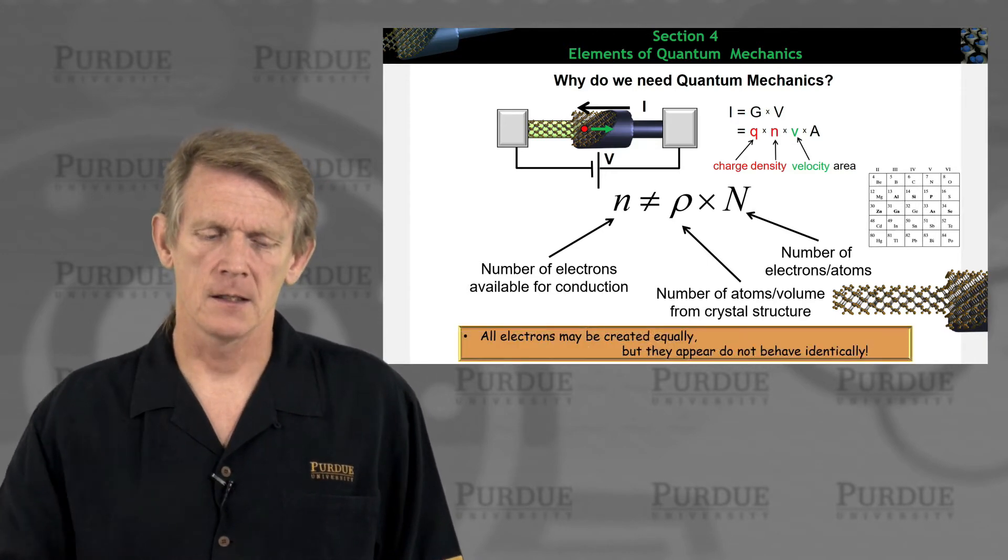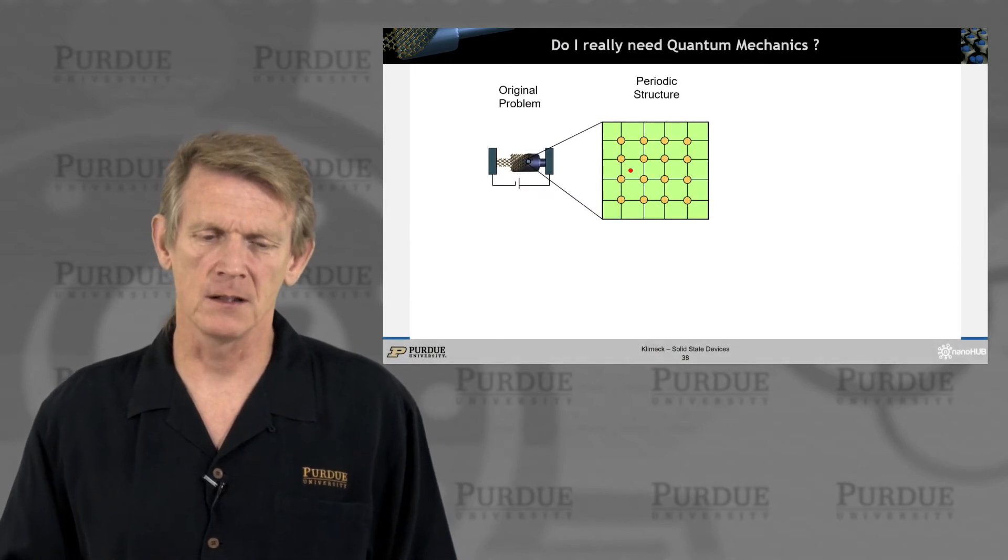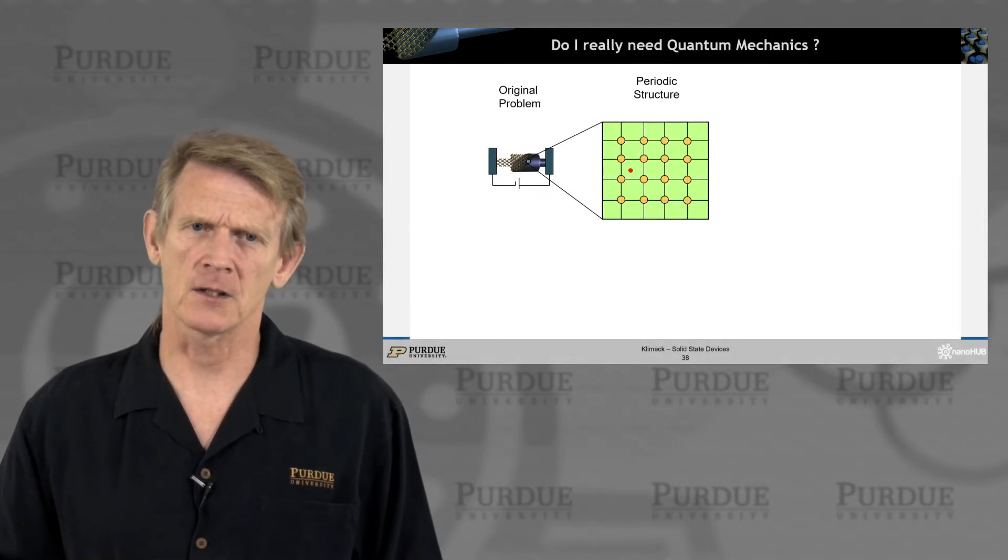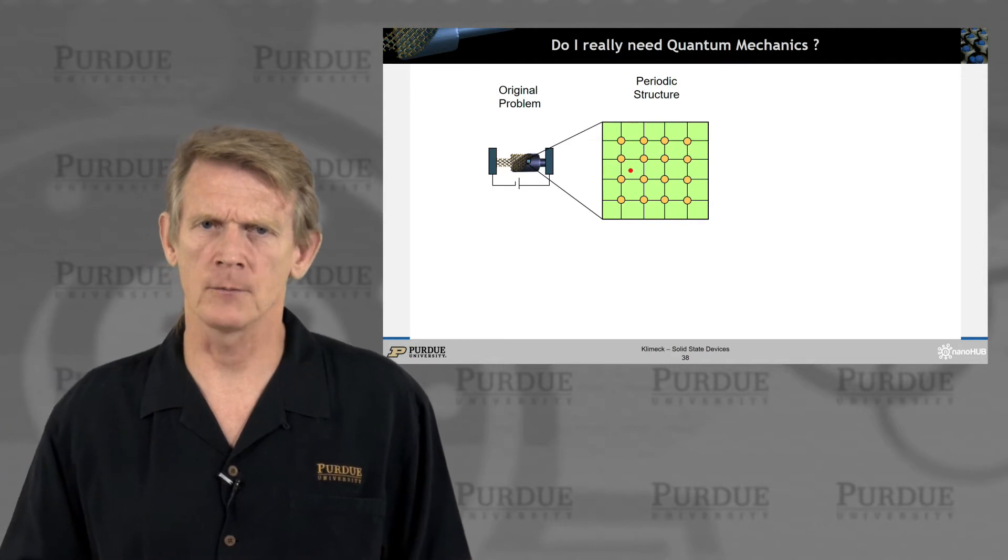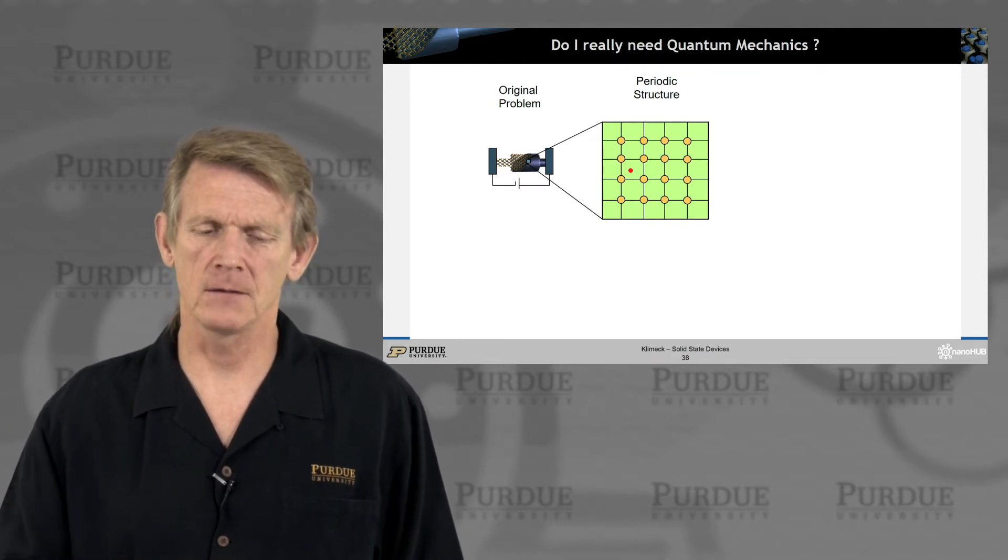The way you start looking at that is where you break out a crystal into a periodic structure. This is a pictogram of a hypothetical simple cubic crystal.